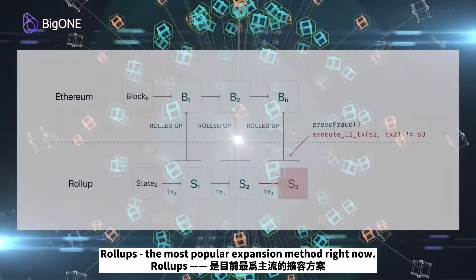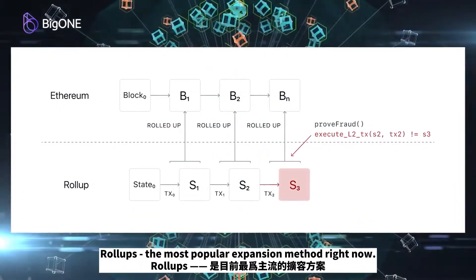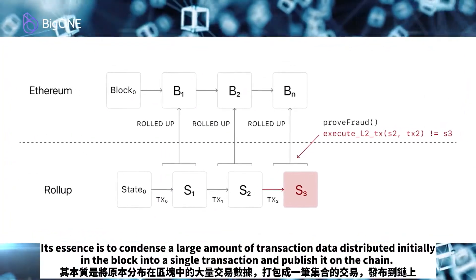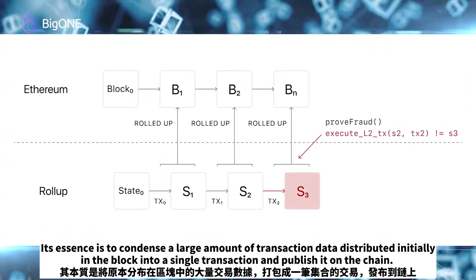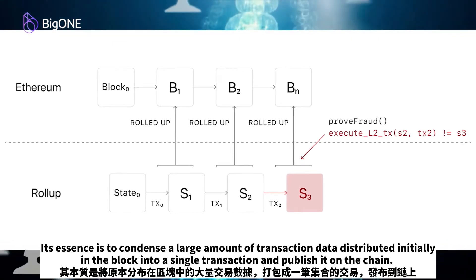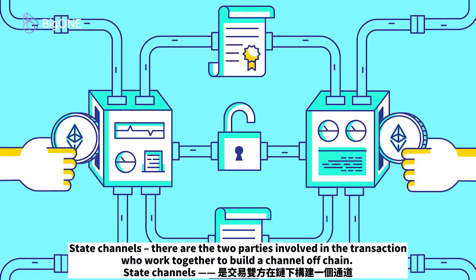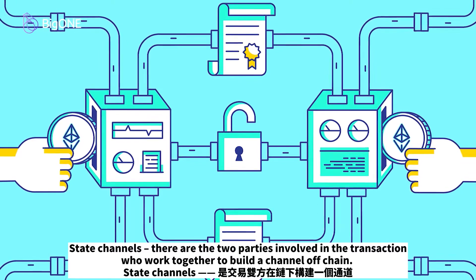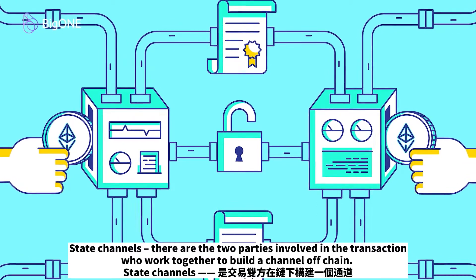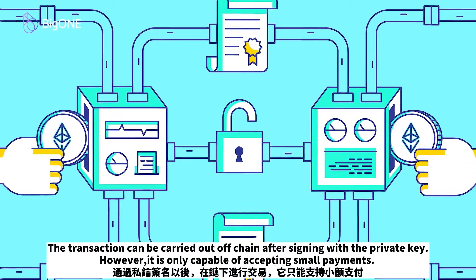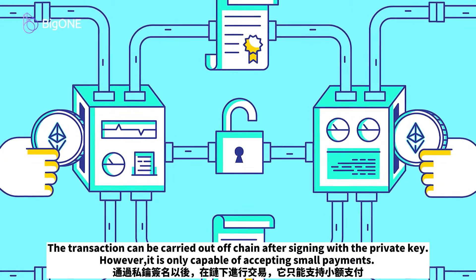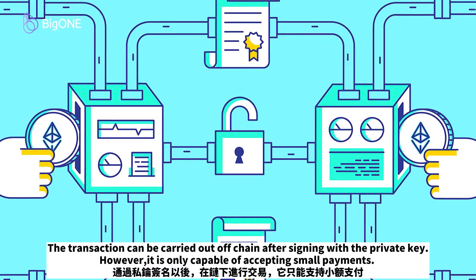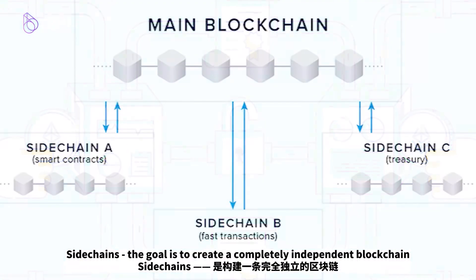The first is Rollups, the most popular expansion method right now. Its essence is to condense a large amount of transaction data distributed initially in the block into a single transaction and publish it on-chain. The second is State Channels, where the two parties involved in a transaction work together to build a channel off-chain. The transaction can be carried out off-chain after signing with the private key, however it is only capable of accepting small payments.